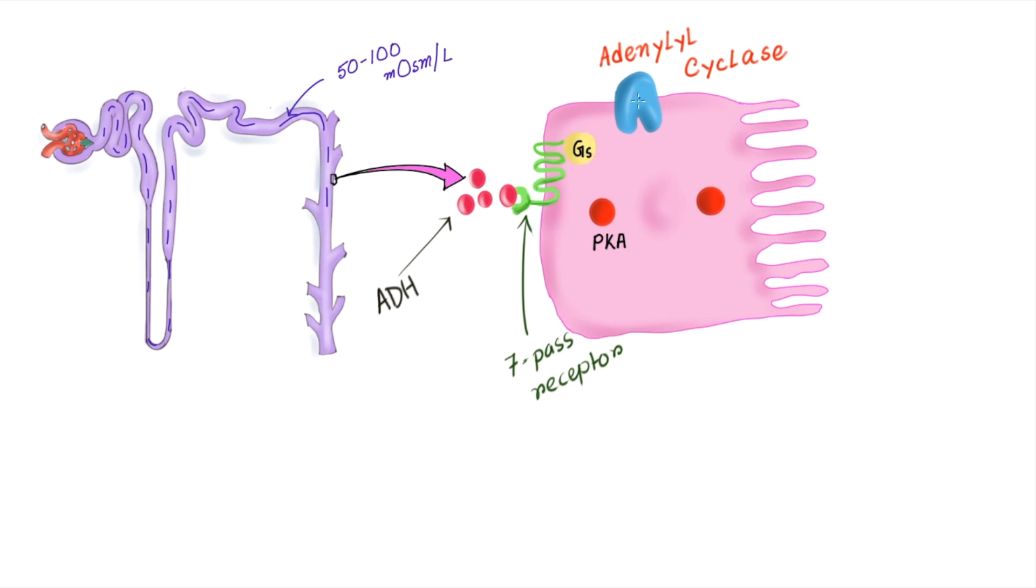And intracellular G protein stimulates adenyl cyclase which converts ATP into cyclic AMP. When intracellular cyclic AMP goes up, it will phosphorylate protein kinase A. All these steps are nothing but to activate this enzyme.